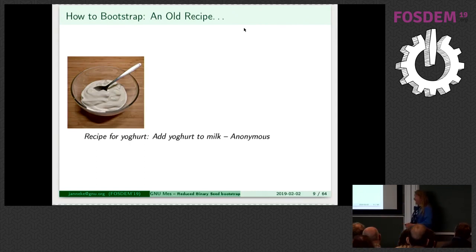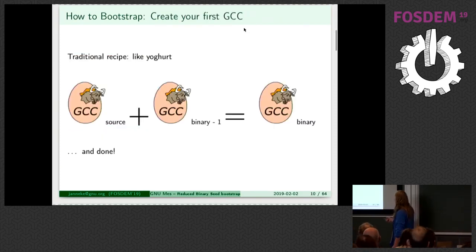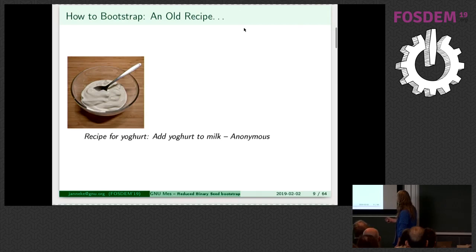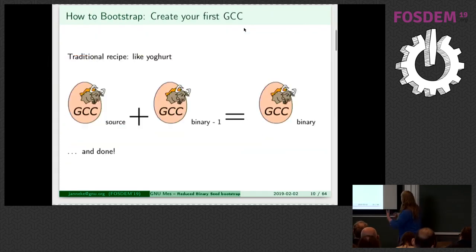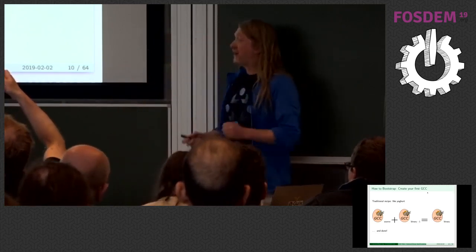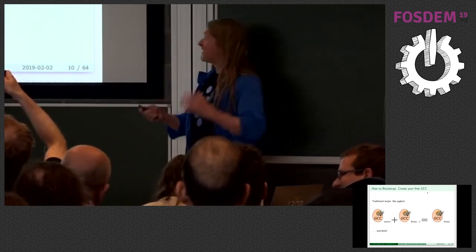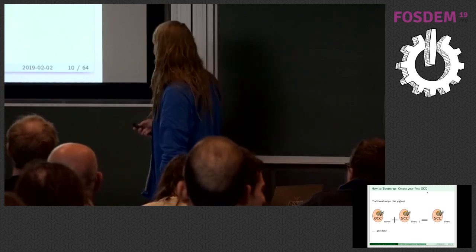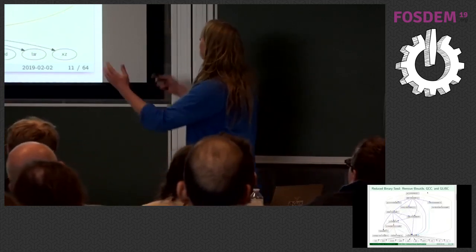We use an ancient recipe. You can think of the source code as milk, and you add a bit of yogurt, and you create more yogurt. So actually, all we have to do, if we want to create a next version of GCC, is just use GCC. And we're done.